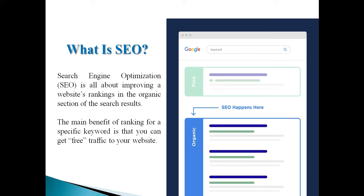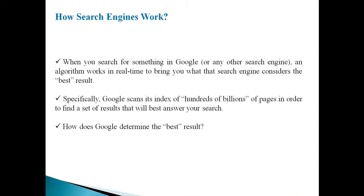For example, suppose someone is searching for a training school. If your website appears on top, they will call you. The main benefit of ranking for a specific keyword is that you can get free traffic to your website. When you appear on Google's top results, you don't pay even a single rupee to Google. It is completely free traffic.